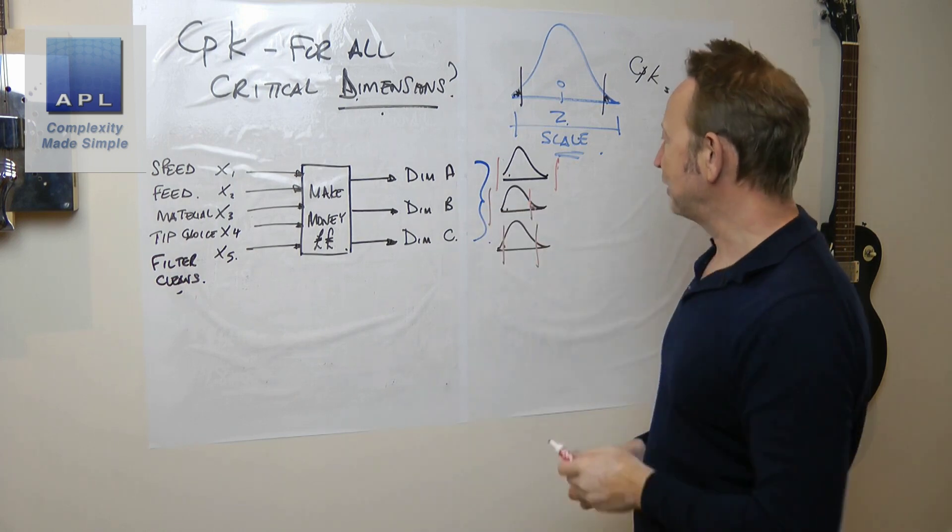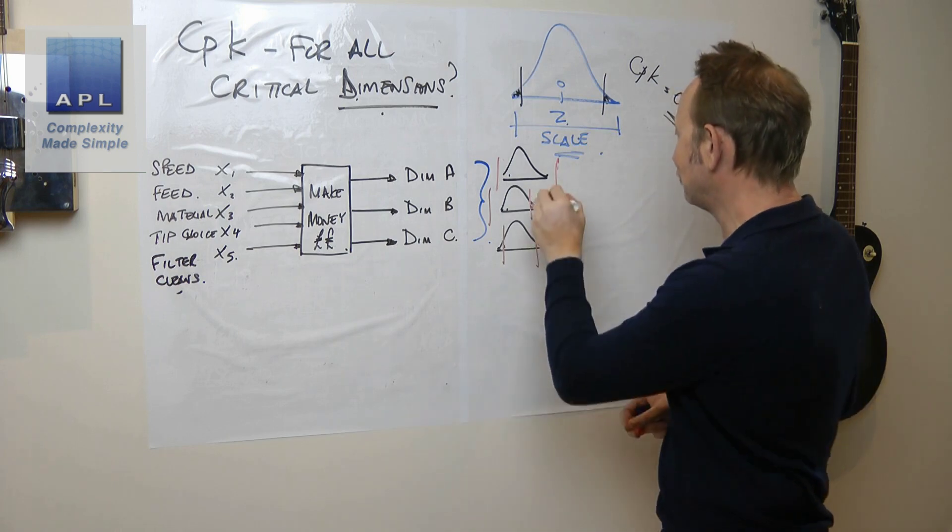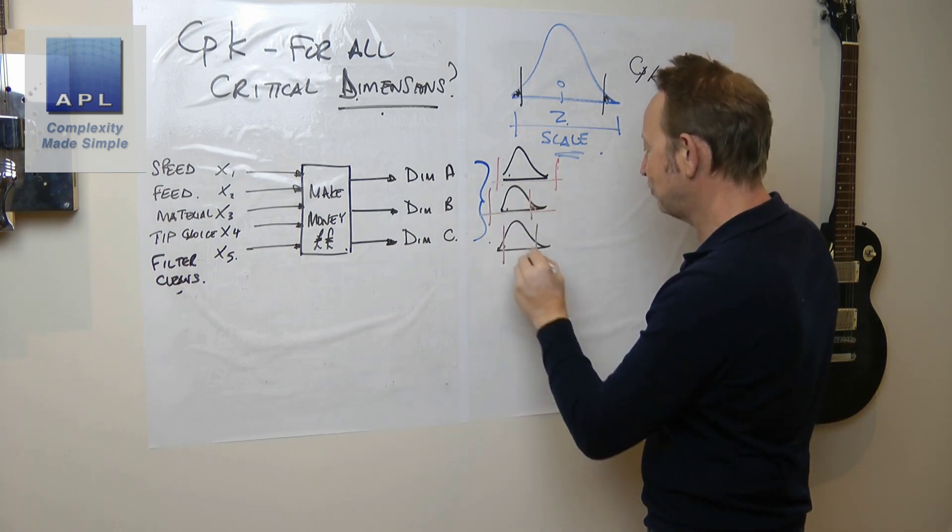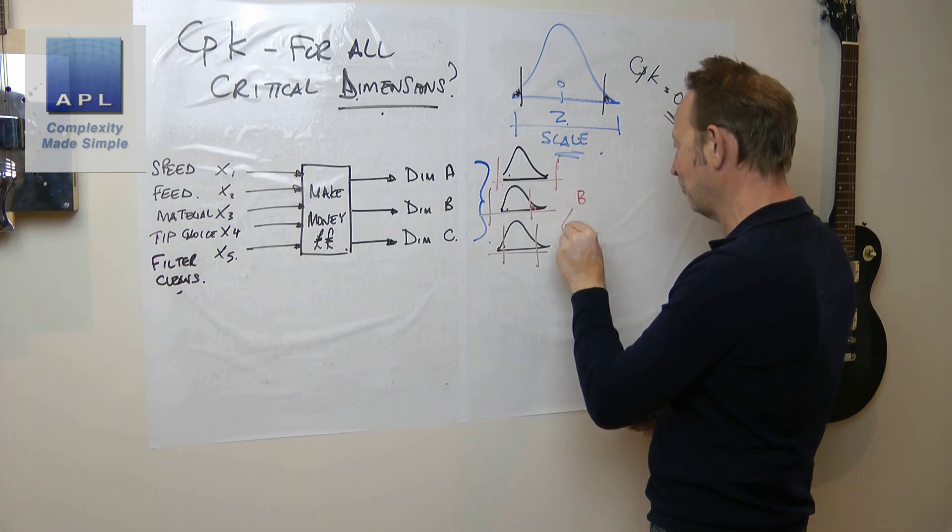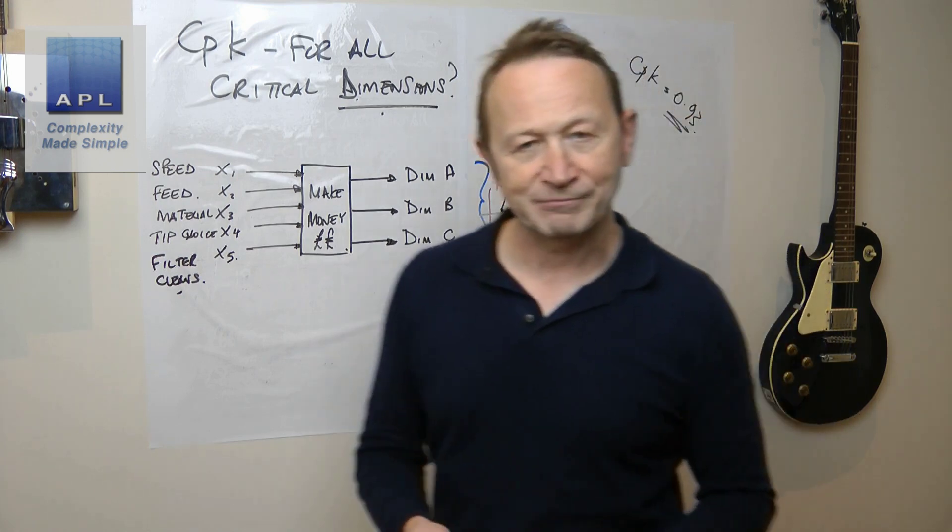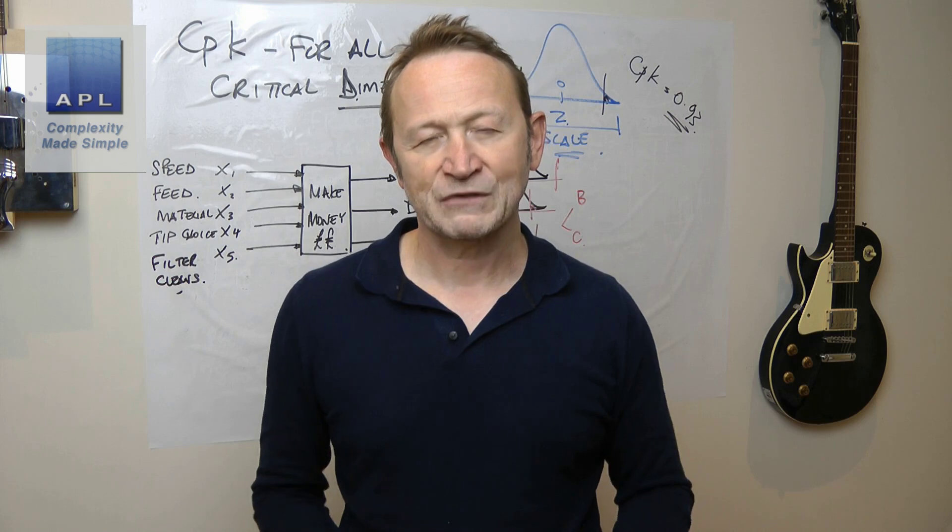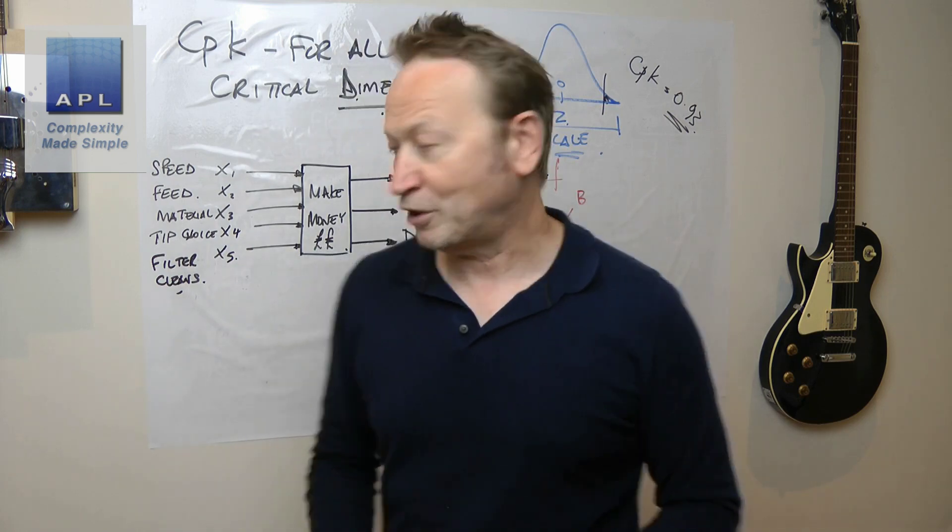You'd look at the individual CPKs of the three critical dimensions and say 'ah, it looks like B and C are my problem' and go fix them. Well, that's what you'd do anyway.